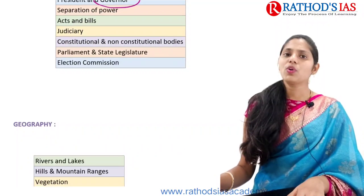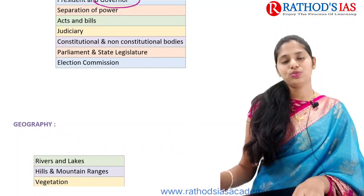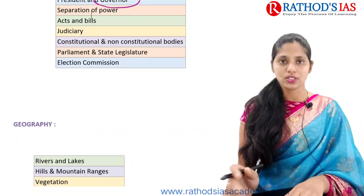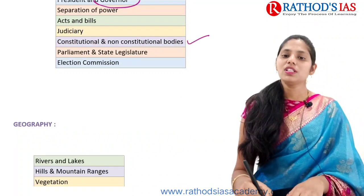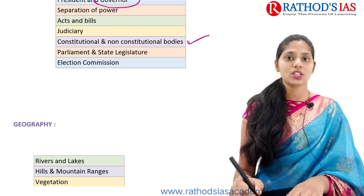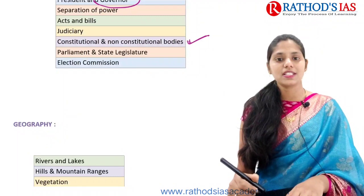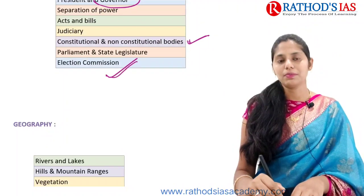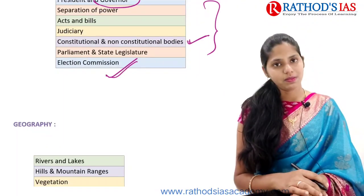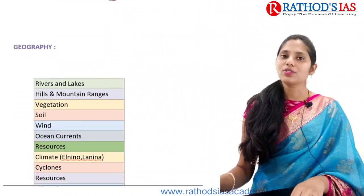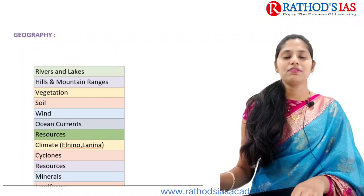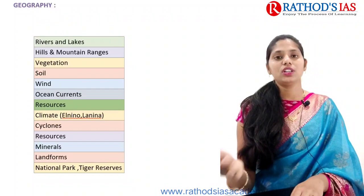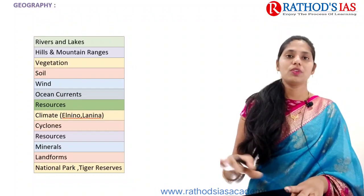Recent constitutional amendment acts and important bills passed in Parliament are also important. You need to know about the Judiciary — especially this year the Supreme Court is highly in the news. You have to be thorough with the Supreme Court, High Court, and district or subordinate courts. You can also expect questions from Constitutional and Non-Constitutional Bodies — this is one of UPSC's favorite areas. Additionally, you need to cover Parliament and State Legislature, and the Election Commission. These are the important core areas from Polity and Governance.